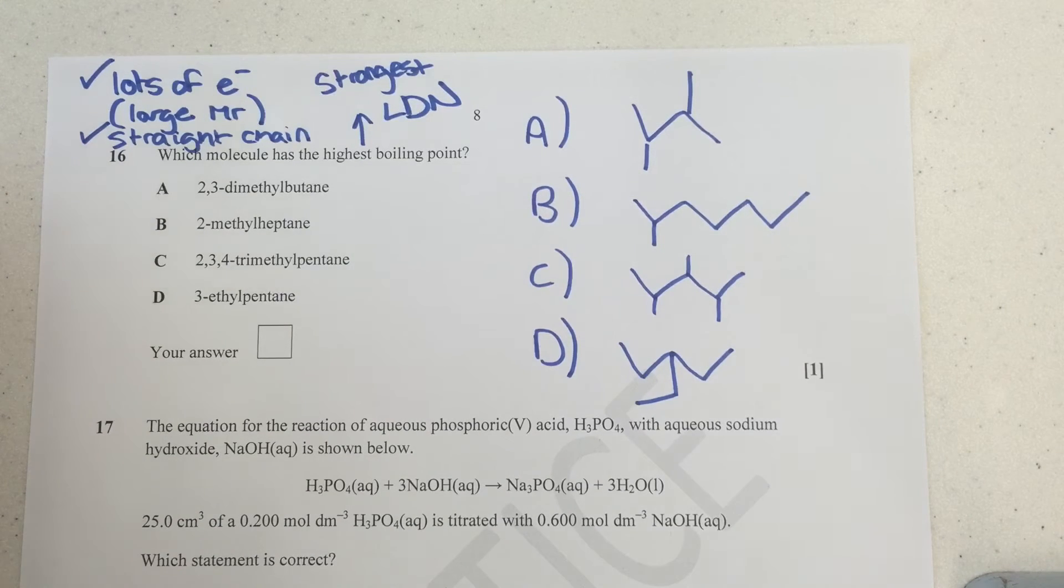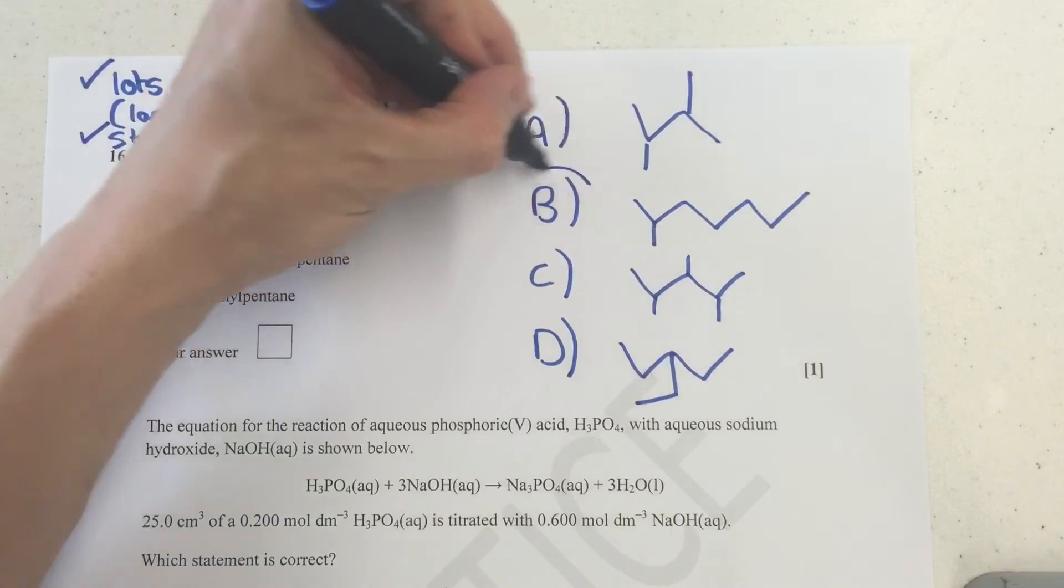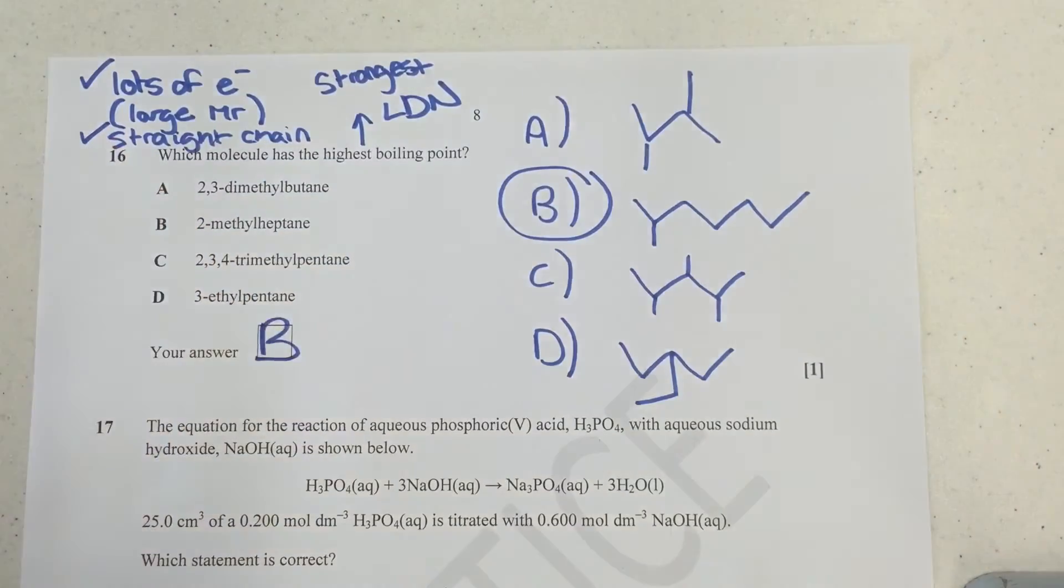If you had something, for instance, that has lots of branches, that's easier to boil because it's got a low surface area contact between the chains, so weaker London forces. And if you've got fewer electrons, well, London forces are caused by a temporary induced dipole. And if you've got fewer electrons, that dipole is going to be smaller. So the one here that's got the straightest possible chain and the largest Mr going is going to be B. So my answer here is B.